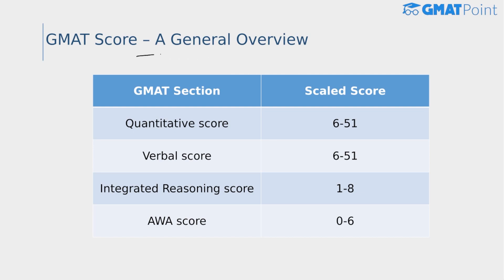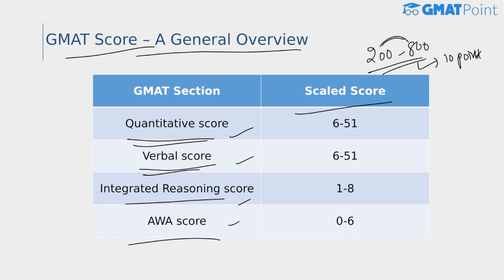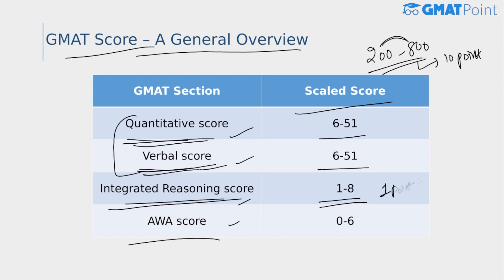Let's have a general overview of the GMAT score. There are four sections tested on the GMAT, and your overall GMAT score ranges from 200 to 800 in 10-point increments — that is multiples of 10 between 200 and 800. The GMAT measures analytical, written, quantitative, and verbal skills important for entrance to a graduate management degree such as an MBA. Each section is assigned a scale score. The total GMAT score is computed only from the quant and verbal reasoning sections. Quant and verbal each range from 6 to 51, integrated reasoning from 1 to 8, and the AWA score ranges from 0 to 6.